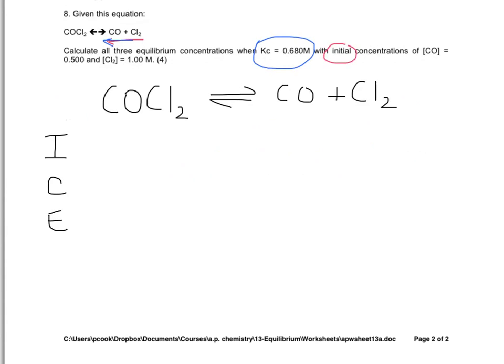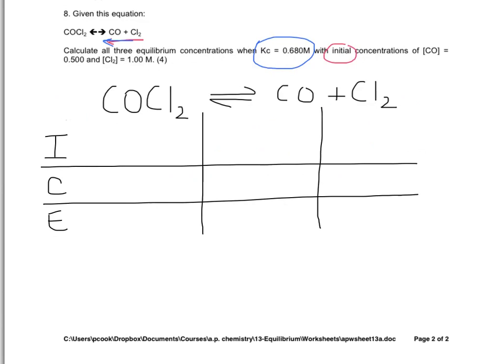So the way to think about it is, we'll look at the problem. If you're dealing with a problem where you know you're going to have to use some algebra, then an ICE table makes a whole lot of sense. So in the case of this particular problem, we know that we start out with zero cobalt chloride.